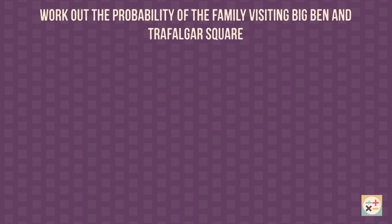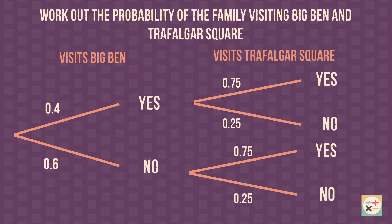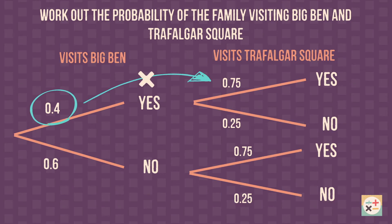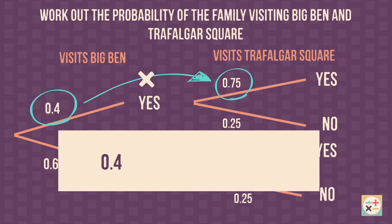Secondly, to find out the probability of a combination of outcomes, multiply the probabilities along the appropriate branches depending on the combination of outcomes you need. In this case, the branches are for visiting both Big Ben and Trafalgar Square. So the answer to this question is 0.3.